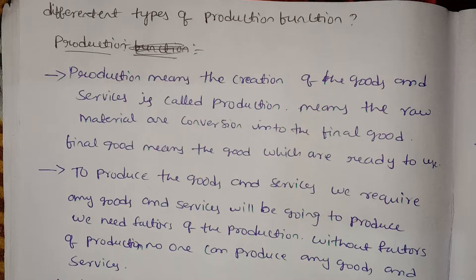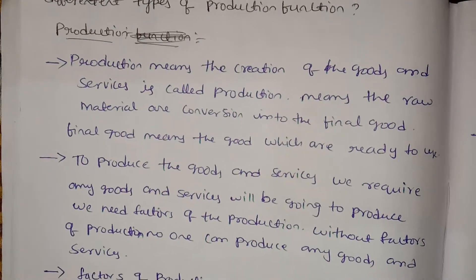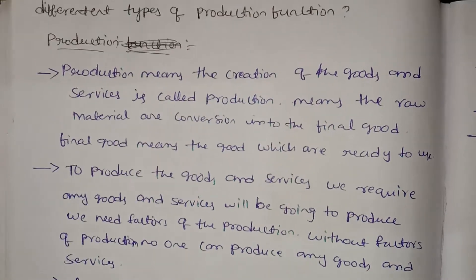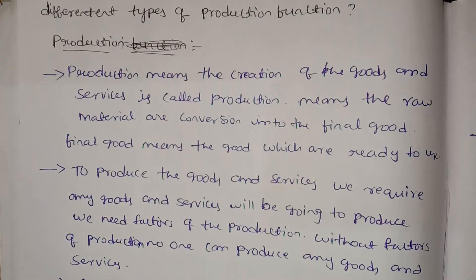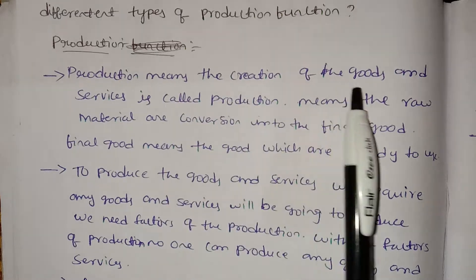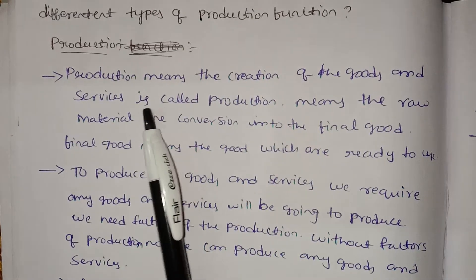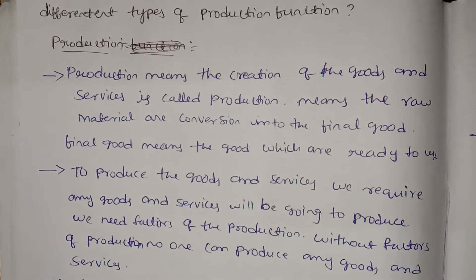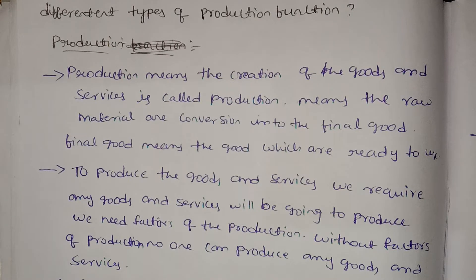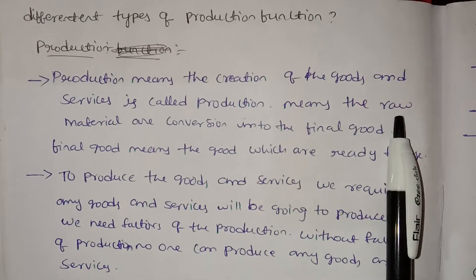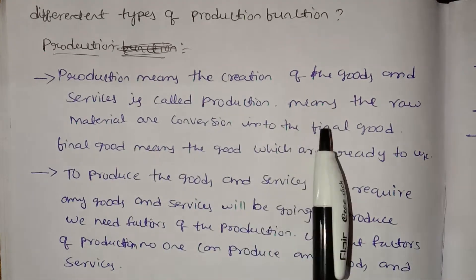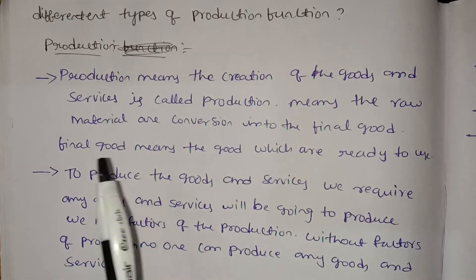Different types of production functions. Production function means the creation of goods and services is called production. Raw materials are converted into the final goods.